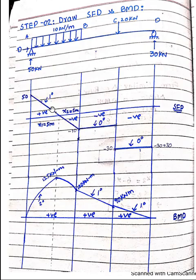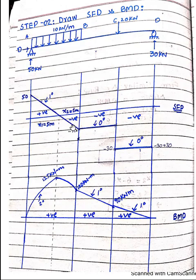An important note: the shear force diagram for any UDL always has a degree of one — it appears as a sloped line. This can be seen in span AB where the degree is one, while spans with no load show a degree of zero — a horizontal straight line.